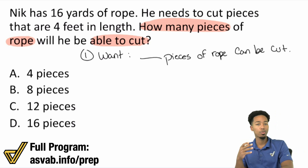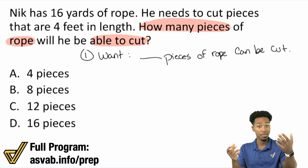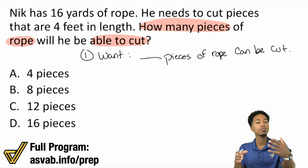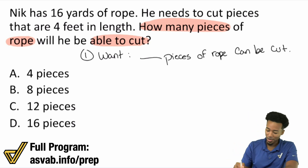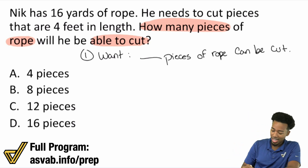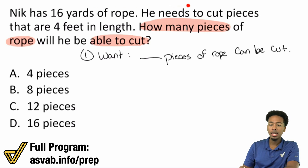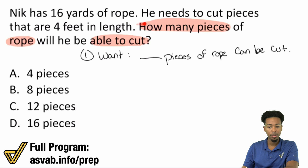Start with that story, because the story is going to reveal the math that you need to do. Don't get ahead of yourself. Let's read the information, take it down, and see what we might have to do. So here we see that Nick has 16 yards of rope. He needs to cut pieces that are 4 feet in length. How many pieces of rope will he be able to cut?